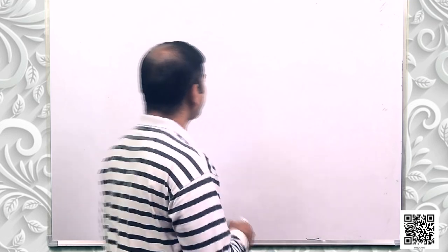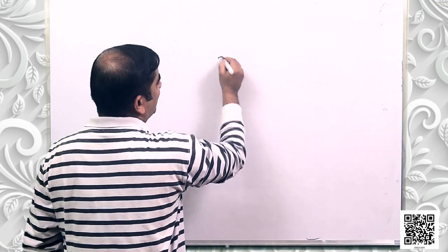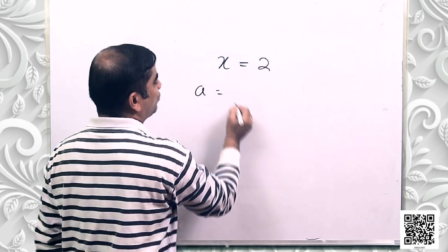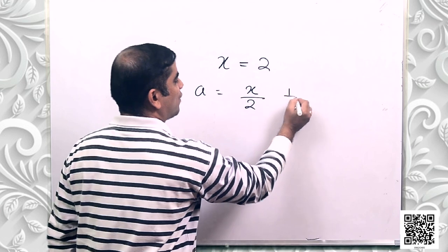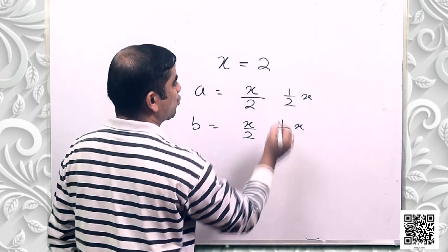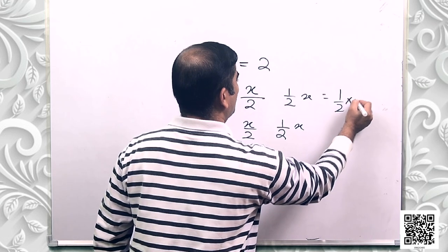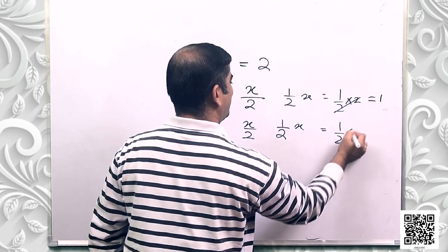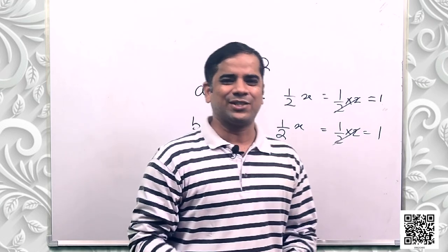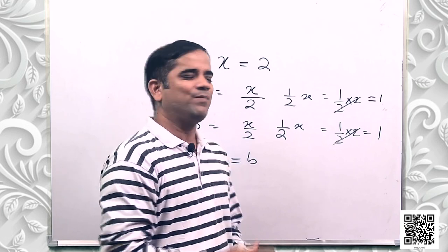The seventh axiom says that things which are halves of the same things are equal to one another — the opposite of axiom six. If X equals 2 and A equals X/2 and B equals X/2, then A equals 1 and B equals 1. So A equals B. Things which are halves of the same things are equal to one another.